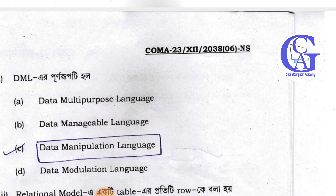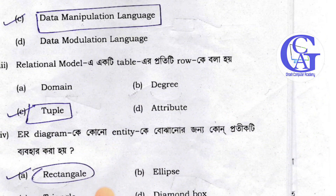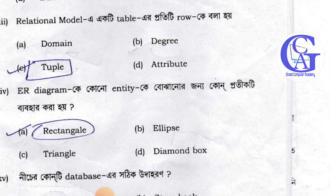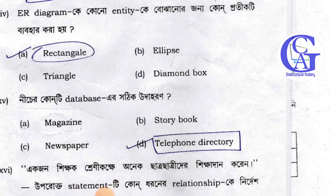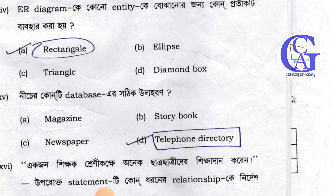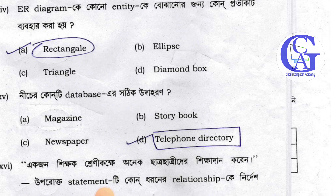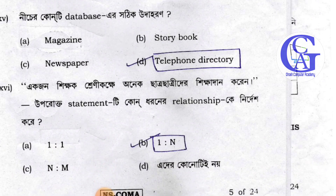DML — D, M, L — Data Manipulation Language. Answer 3 is tuple. Answer 4 is rectangle. Rectangle is an entity in a database. Answer 3 is telephone directory. Student — one-to-many relationship.